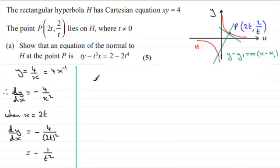So now we've got the gradient of the tangent at the point P, we are in a position to get the gradient of the normal. So the gradient of normal, using the perpendicular gradient rule, switch the sign, which is going to be positive now, and reciprocate this. So you're going to end up with t squared.